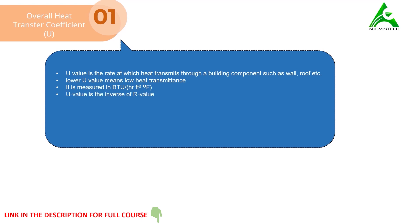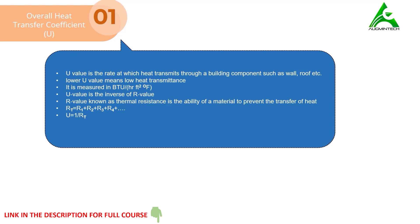U-Value is the inverse of R-Value. R-Value, most commonly known as thermal resistance, is the ability of a material to prevent the transfer of heat. The higher value of R means the building components won't allow heat to travel into the system easily. To find the total R-Value of a building component, the individual resistance of each component is calculated and added accordingly, then U-Value is found by simply taking the inverse of the total R-Value.